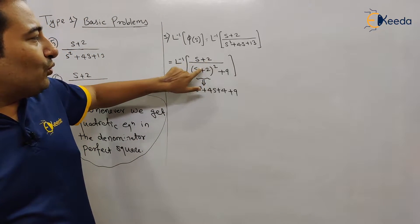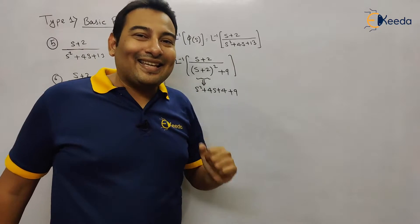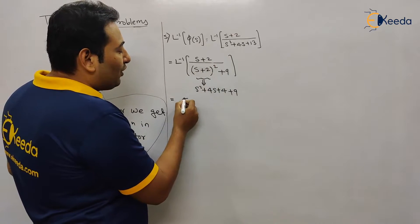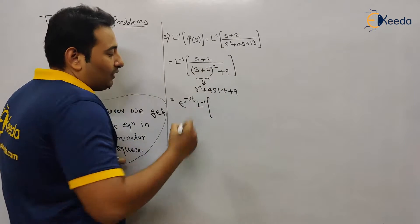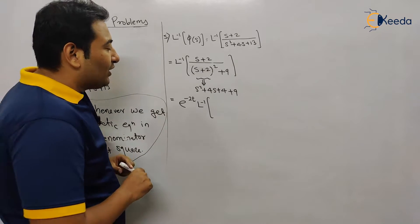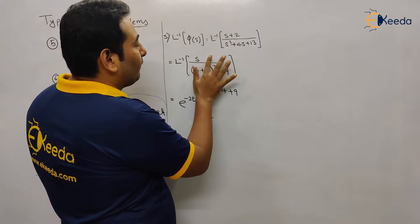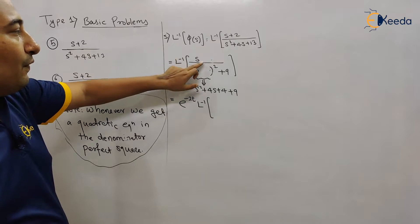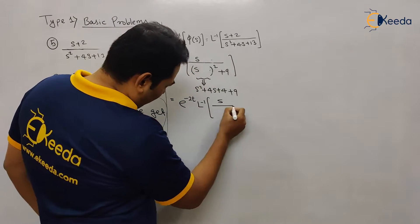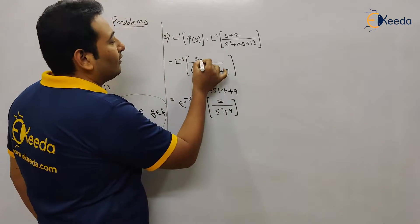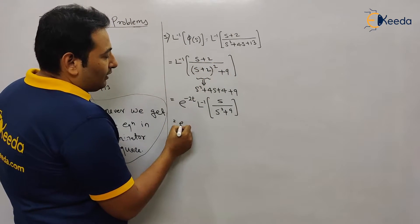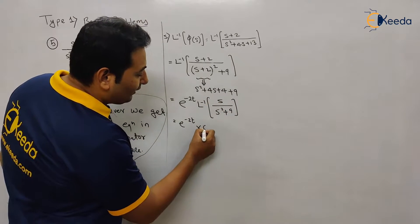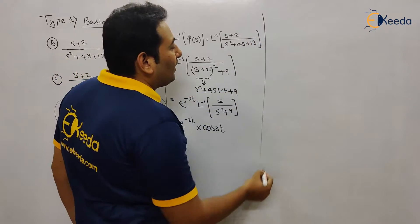Now, do you find shifting in this problem? Yes — see here s+2 and s+2 — the s is shifted by +2. So since s is shifted by +2, we take e^(−2t) outside. Forget about the shifting, write it down as it is — whatever you see — so this will be s upon (s² + 9). The Laplace inverse of that is directly cos(3t). Problem number 5 is done.